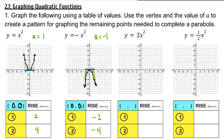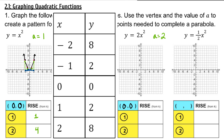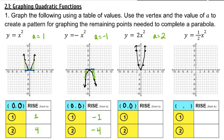In our third example, a, the coefficient of x squared, is 2. Our vertex is still (0, 0). Plugging in -2, -1, 0, 1, and 2 gives our points. Looking at the pattern: one unit to the left and one unit to the right, the y value has now changed by two units — the y value rises two units. Two units away from the vertex, the y value rises eight units.